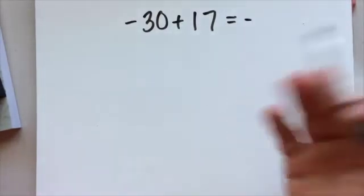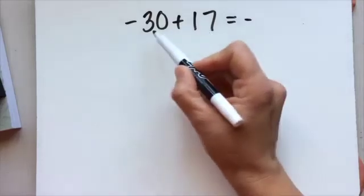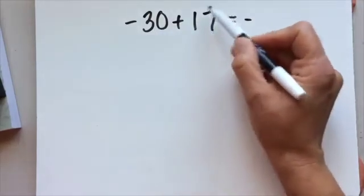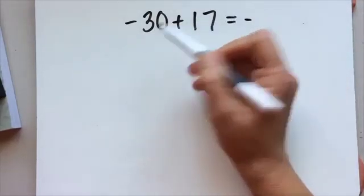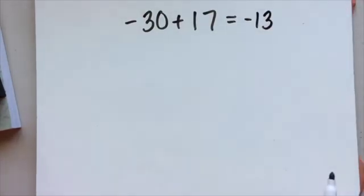This is a little mental math here. The way I would do this one is to say, well, 15 and 15 is 30. But I'm taking 17 away from this 30, so it's going to be 2 less than 15. So negative 13.